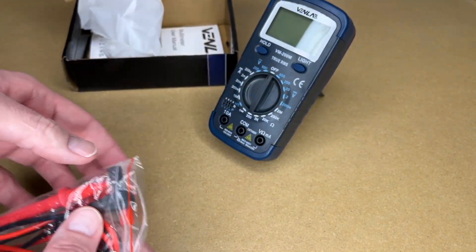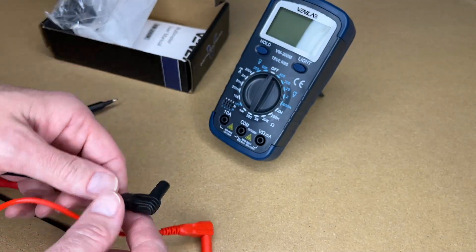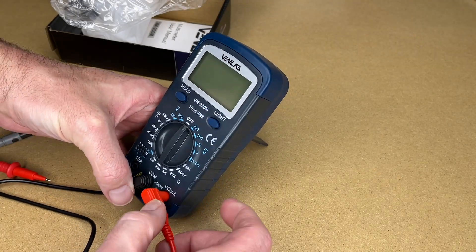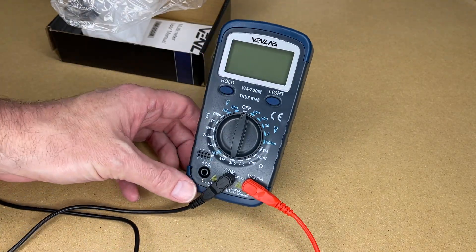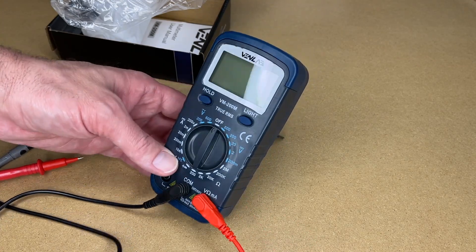Before I turn it on, I'll get the leads out. The leads are around 32 inches. I can plug these in. The black will go in the com, or common, and the red will go in the input. Now if you're measuring up to 10 amps in current, you'll go over here to the left. And now let's turn it on.